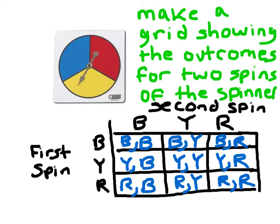Now, how many possible outcomes are shown on the grid? Right. There's nine.